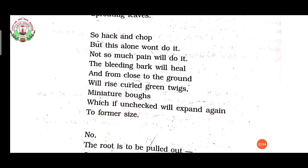In the second stanza, hacking a tree with a knife or an axe, or chopping it off, may inflict pain on the tree, but it is not enough to bring the tree down. The bleeding part — the wood in the bark from where the sap flows out — sap means gum that flows from the tree when we cut it. Where it has been chopped off, with time new green twigs will grow again, and what was chopped off will be replaced by new growth, which will grow to its former size.